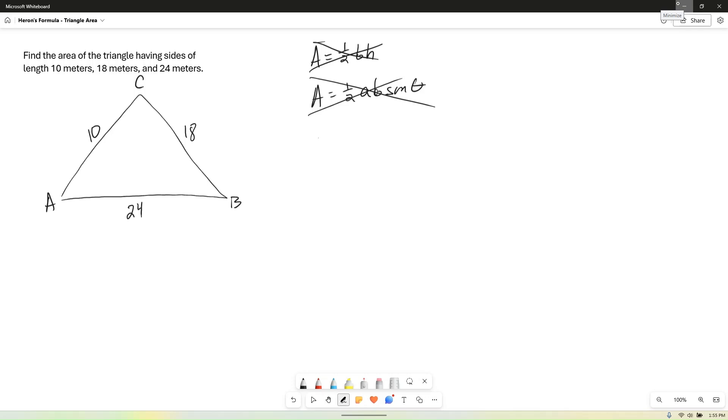we first need to compute the semi-perimeter, which is easy to compute. It is half of the sum of the three sides, so one-half times A plus B plus C. So in this case, the semi-perimeter is going to be one-half of 10 plus 18 plus 24. And that sum is going to be 52, so half of 52. And so our semi-perimeter is going to be 26.